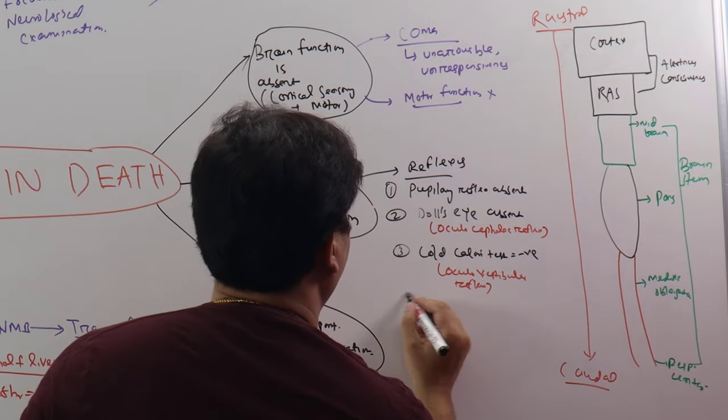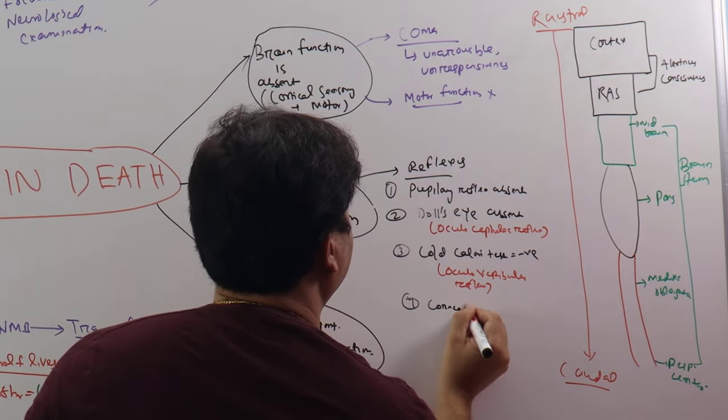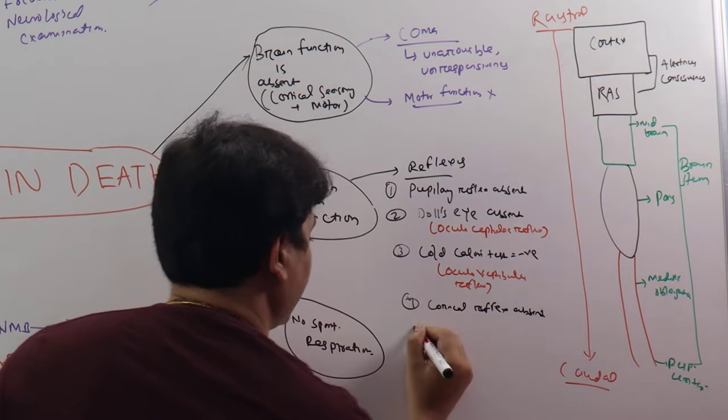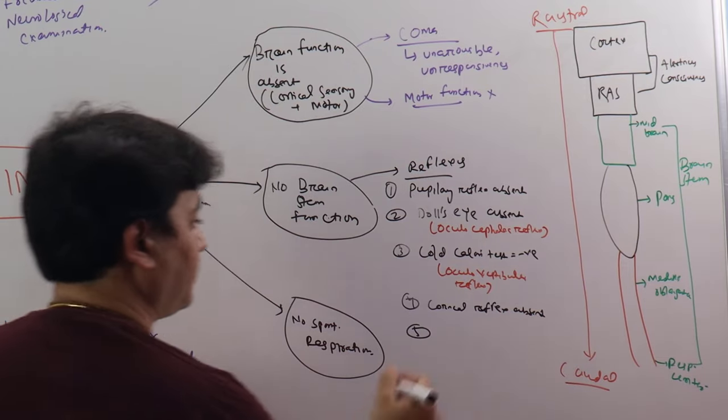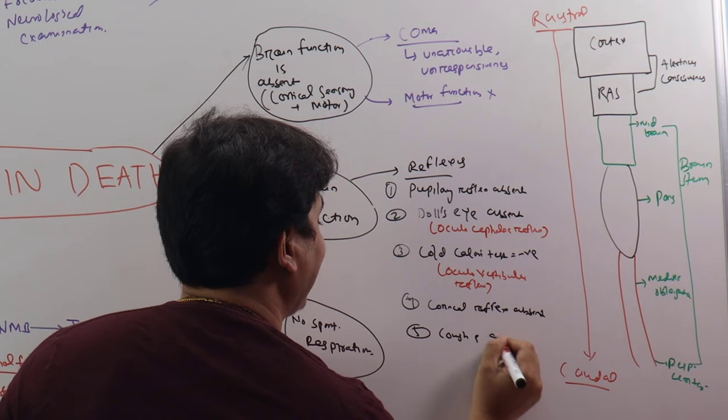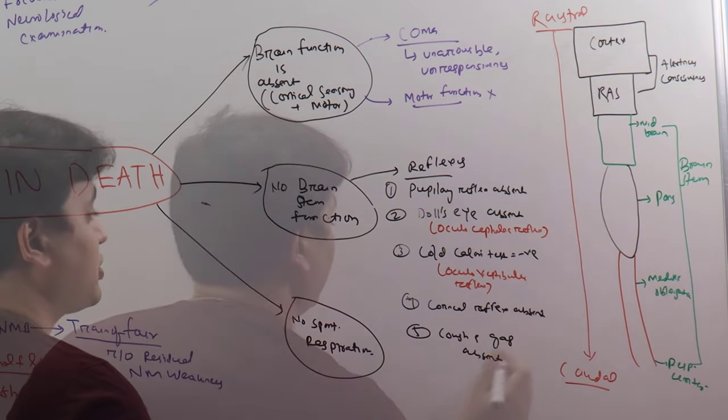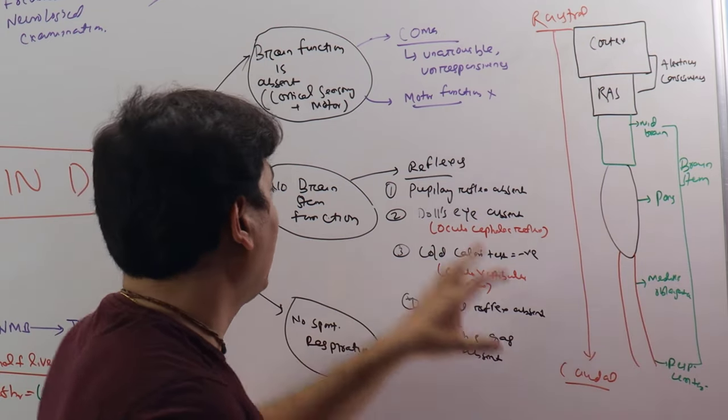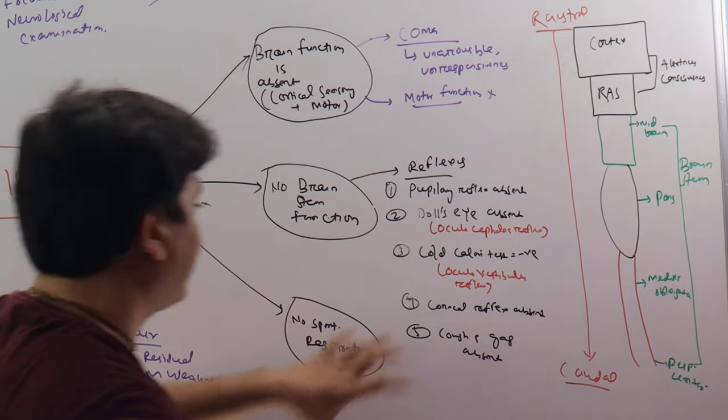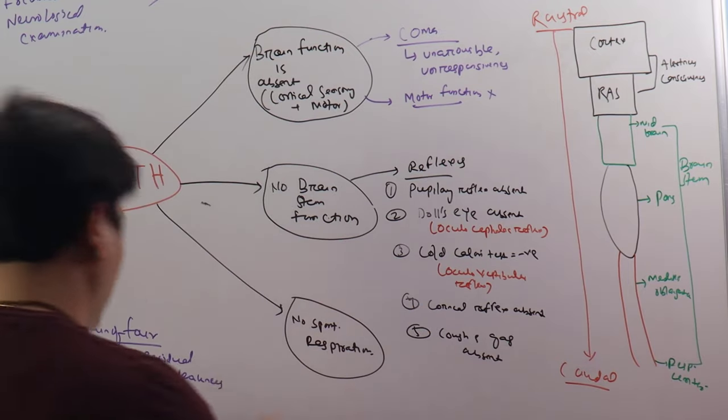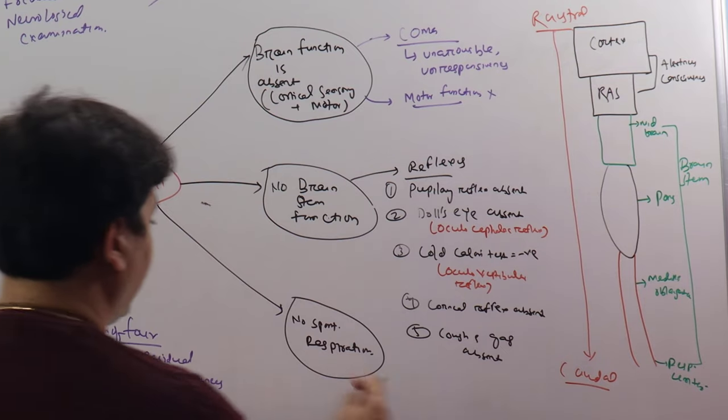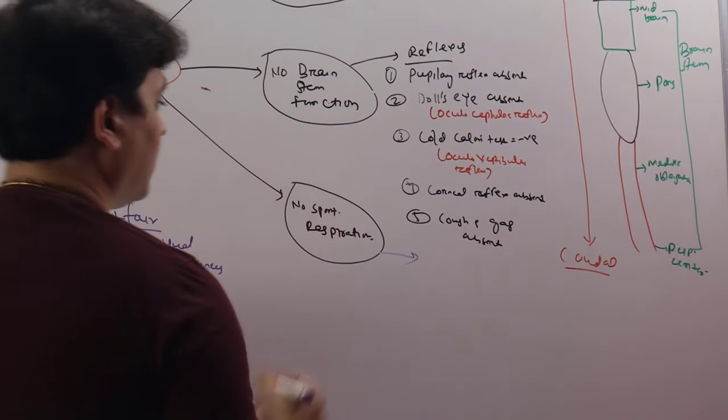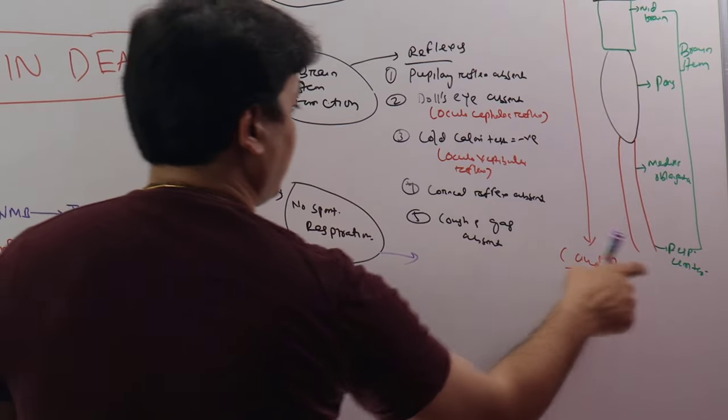Then we have corneal reflex absent. Then we have cough and gag absent. You must remember that the cough and gag reflex center lies in the medulla oblongata. Whenever these things are absent, we have to finally prove there is no spontaneous respiratory movement also.